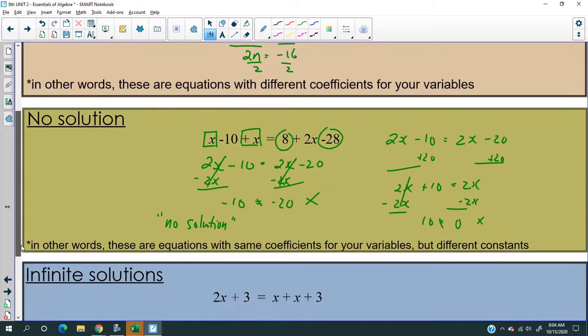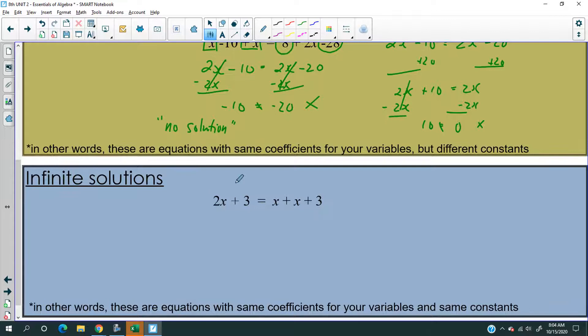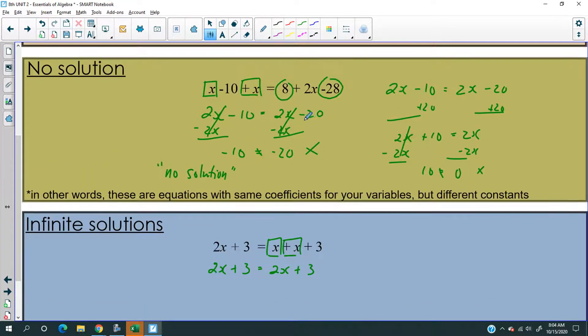Now, what about the third case, where there are infinite solutions? So what does that even mean? Let's try it again. So here we have 2x plus 3. Combine like terms. So that's 2x plus 3. Now, look at this. This is a little like the one before, but not completely. Why? Because examine this, examine this equation here that we rewrote.